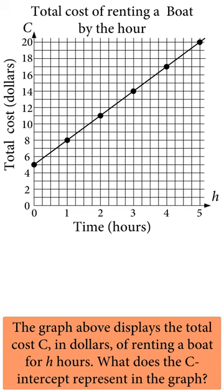The graph above displays the total cost, c, in dollars of running a boat for h hours. What does the c-intercept represent in the graph?